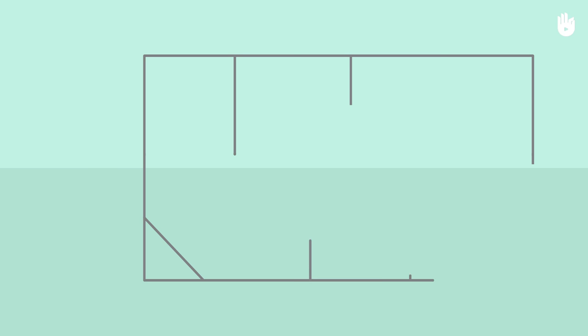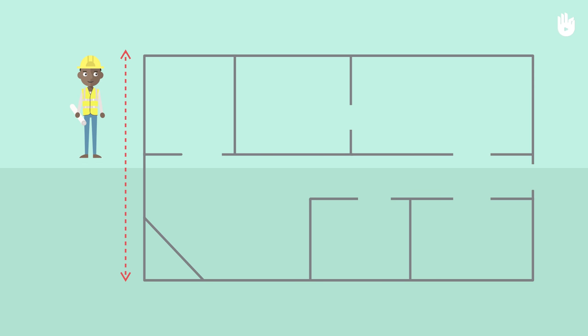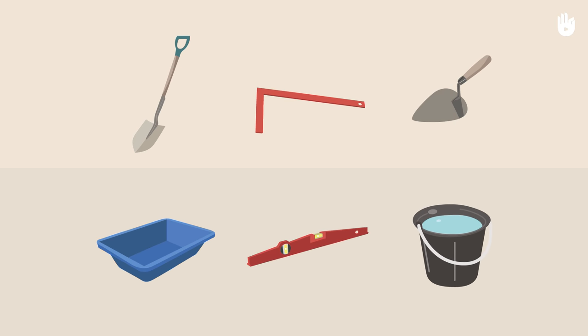After reading the drawings, they have to check if the measurements are correct and match with the construction site. Once the measurements are verified, the assistant mason decides on the equipment required to build the walls.